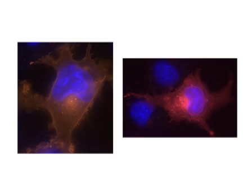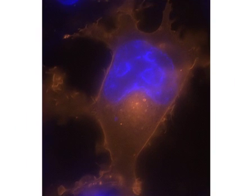These next two images show live COS7 cells transiently transfected with pSNAP-ADR beta 2. Cells were labeled with SNAPCELL TMR-star and counterstained with Hoechst 33342. The pSNAP-ADR beta 2 construct was generated using the pSNAP tag M vector.